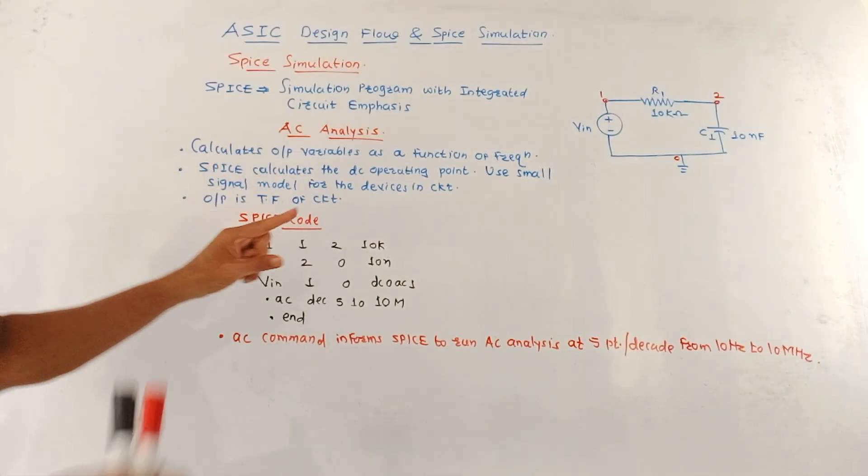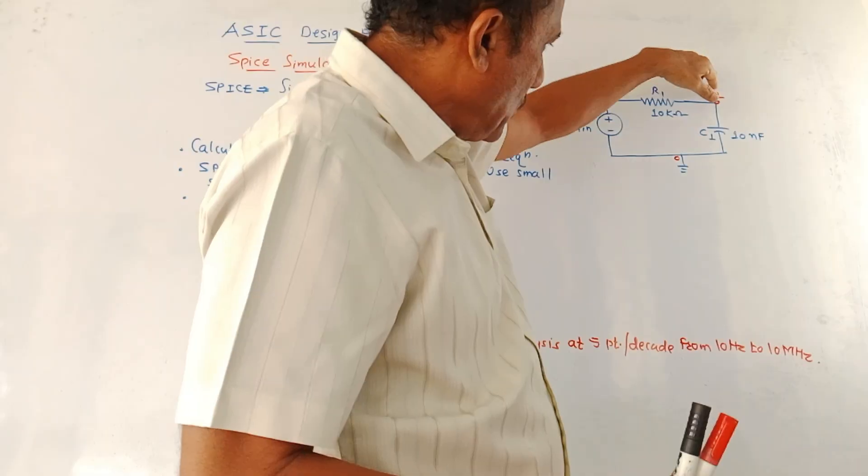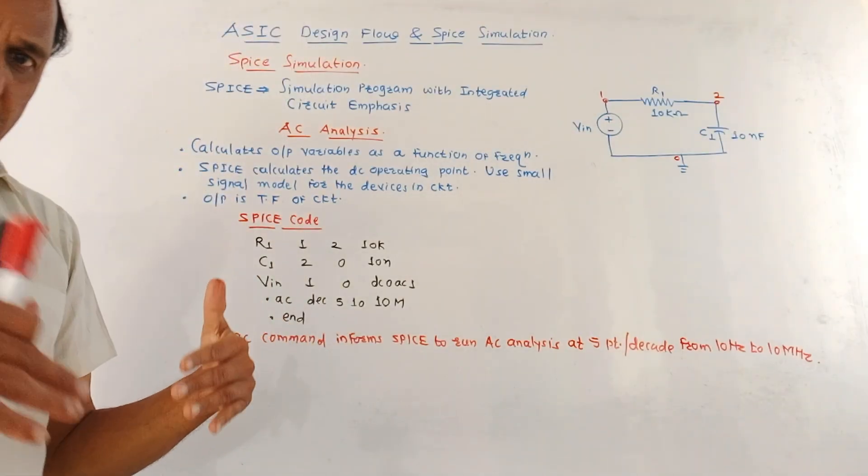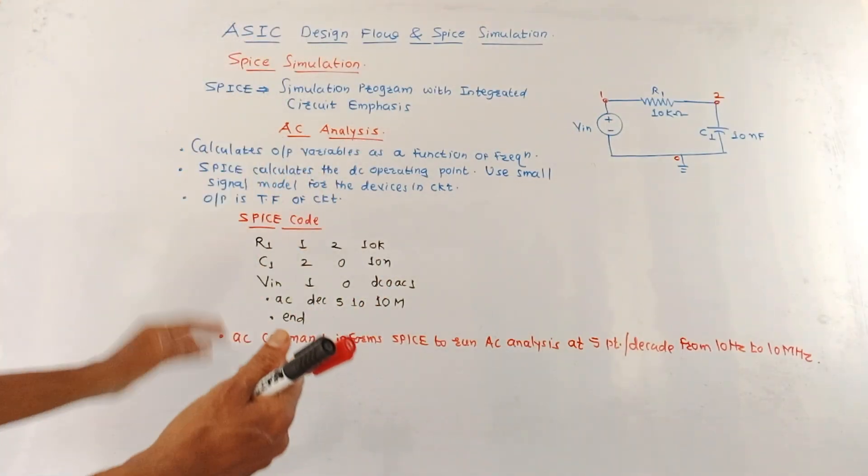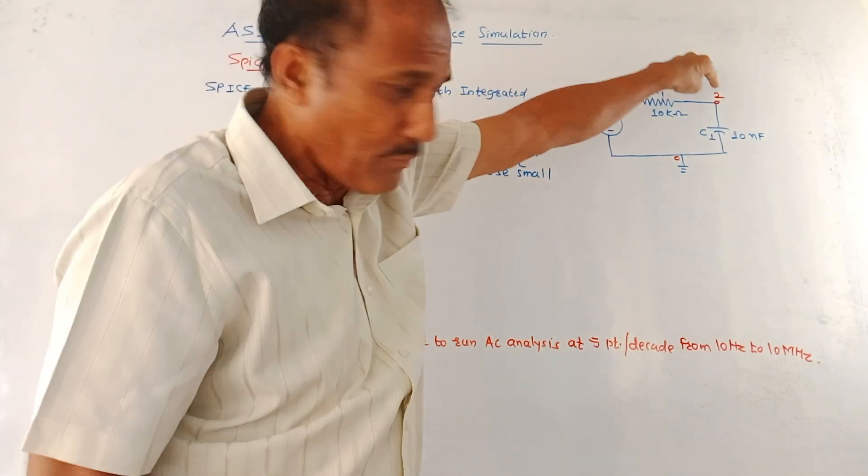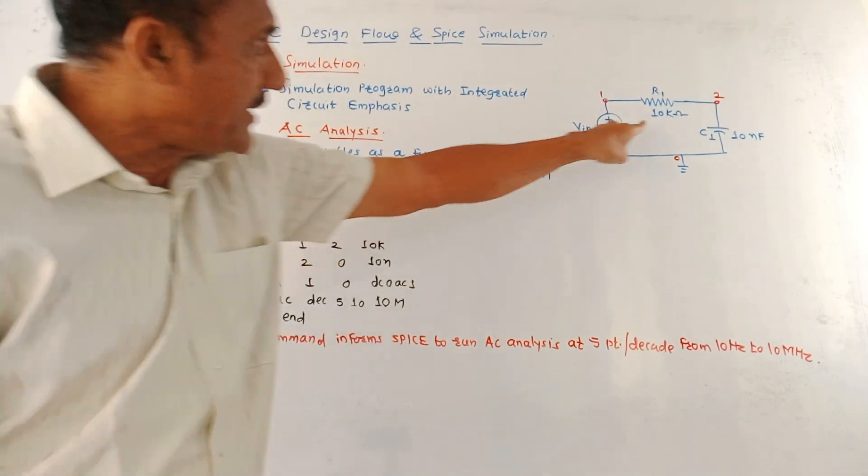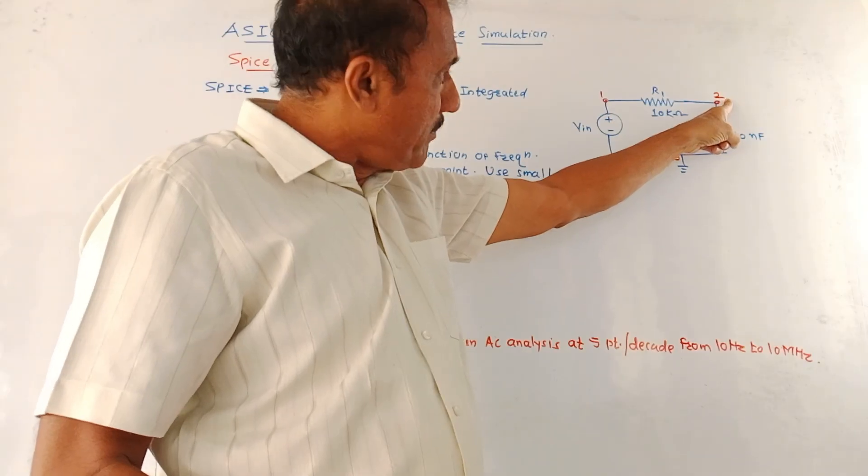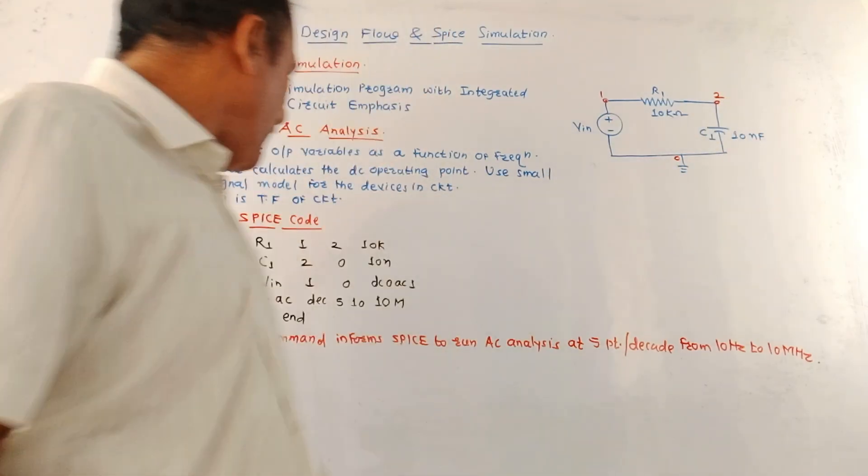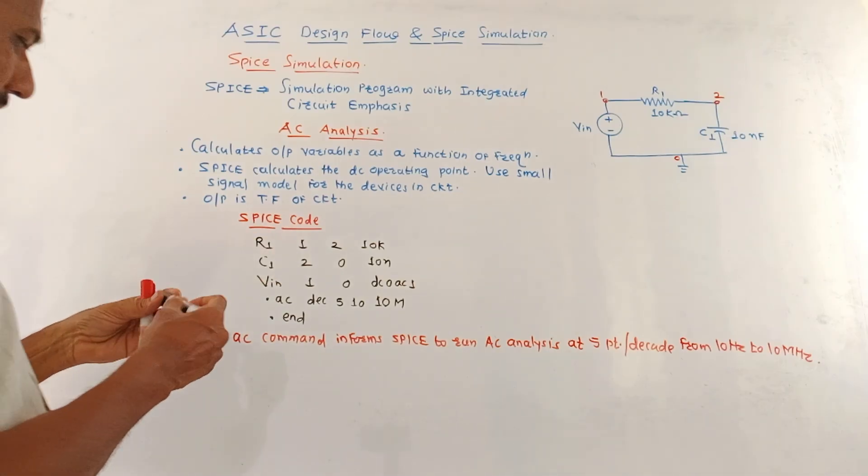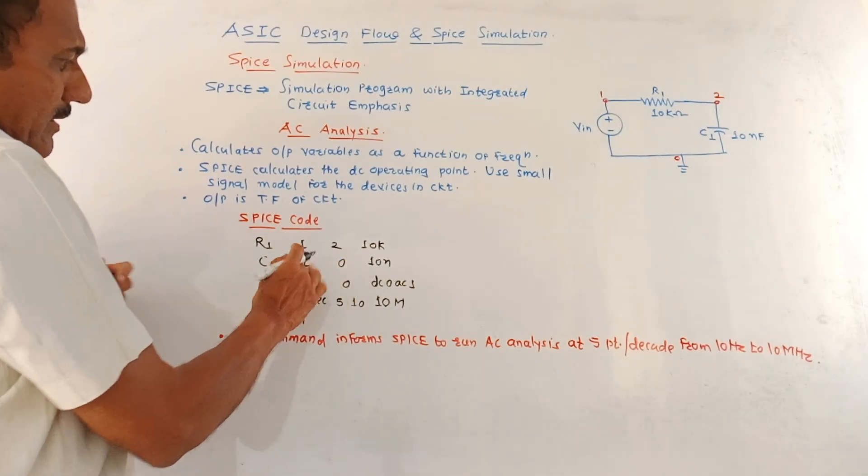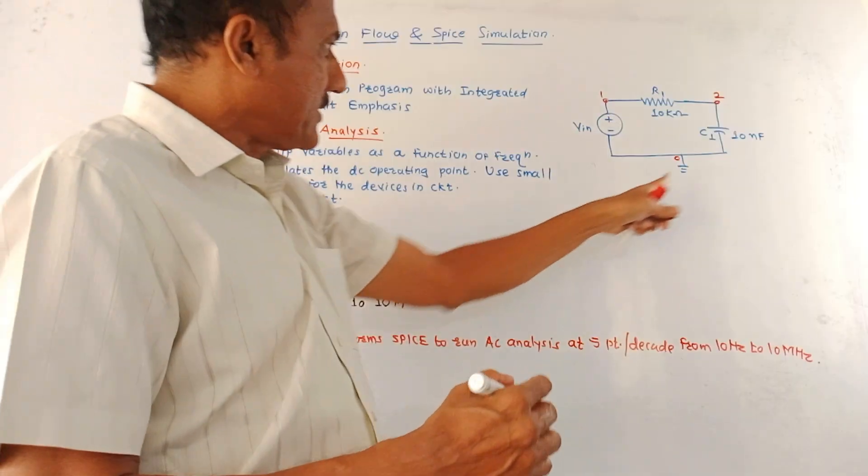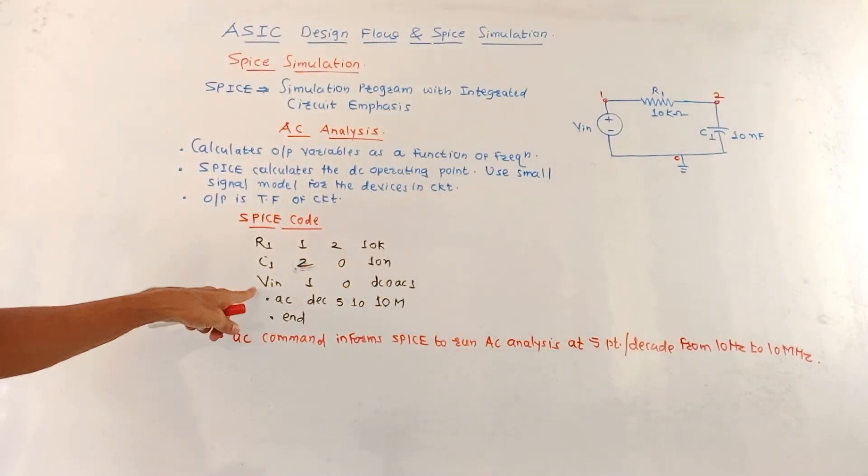Now I have written the SPICE code. See, I have marked different points that is 1, 2 and this point is 0. R1 is connected between 1 and 2. Just now we discussed the syntax for resistor, capacitor and voltage sources. For R1, R1 is connected between points 1 and 2. So R1, 1, 2 and its value is 10 kOhm. Then capacitor C1 is connected between points 2 and 0 whose value is 10 nanofarad. So C1 is connected between 2 and 0 and its value is 10 nanofarad.